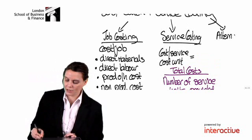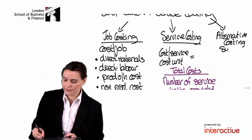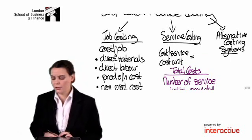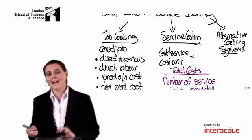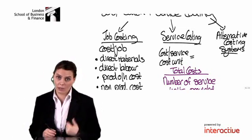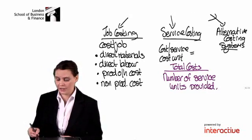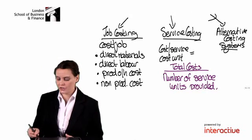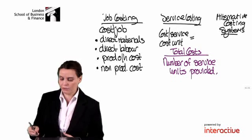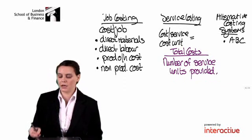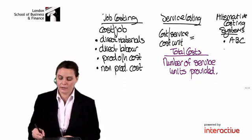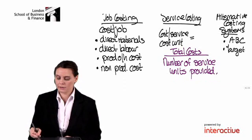Just an add-on: alternative costing systems. This is a newer area of the syllabus, potentially one that will come up as a theory question, but only if you know the theory. You just need to understand the principles of a couple of other costing systems, including activity-based costing or ABC, target costing and life cycle costing.